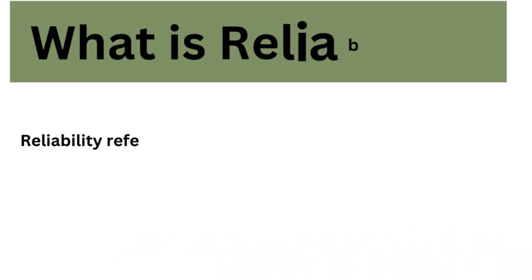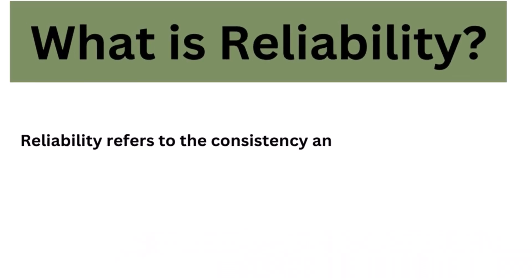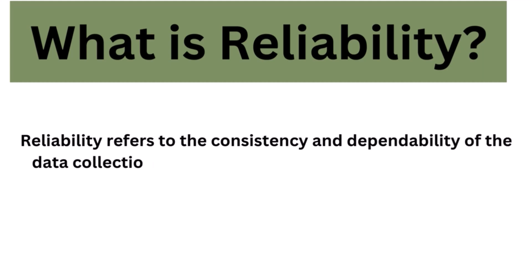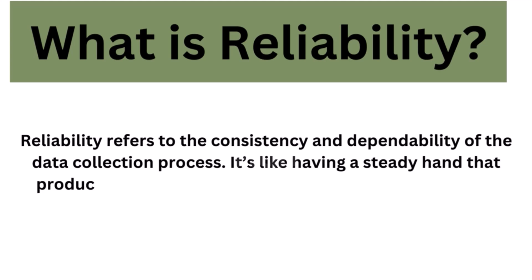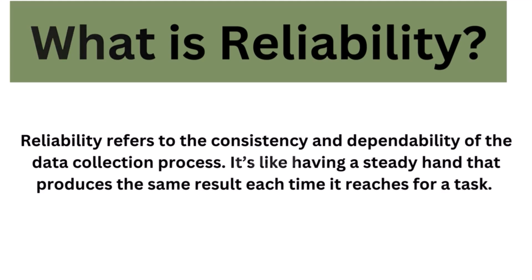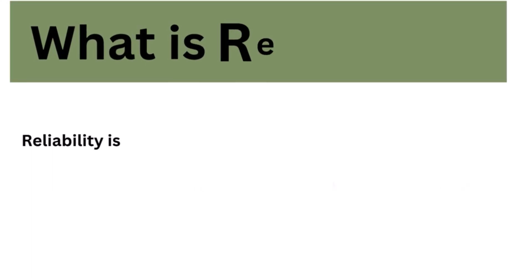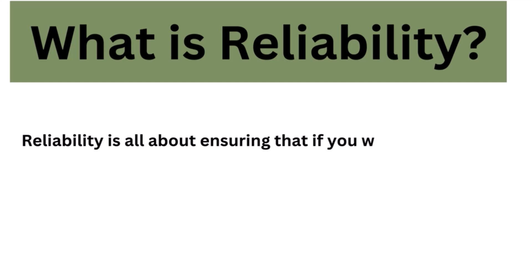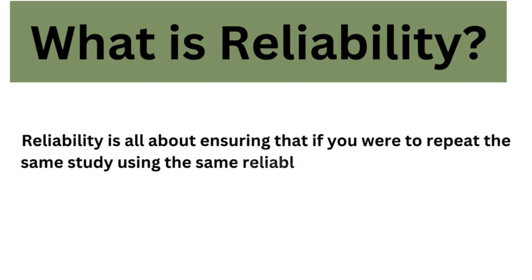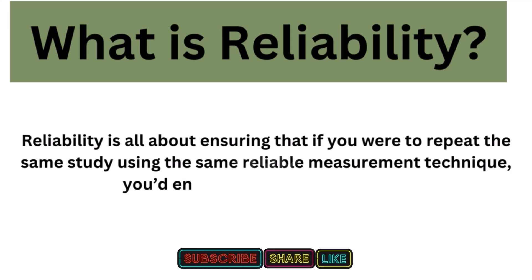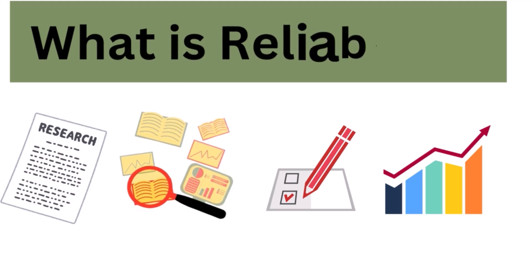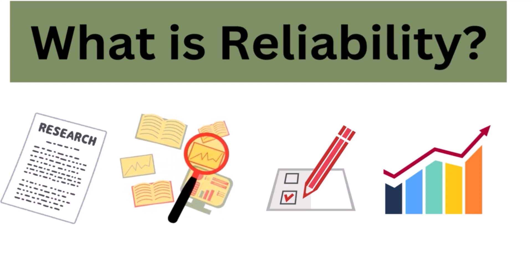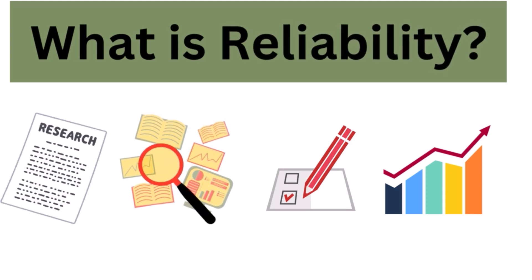So first, what is reliability? Reliability refers to the consistency and dependability of the data collection process. It's like having a steady hand that produces the same result each time it reaches for a task. In the research context, reliability is all about ensuring that if you were to repeat the same study using the same reliable measurement technique, you'd end up with the same results. It's like having multiple researchers independently conduct the same experiment and getting outcomes that align perfectly.